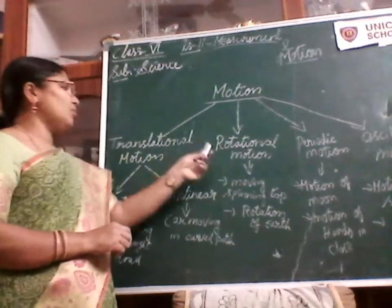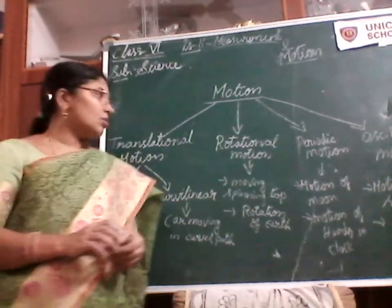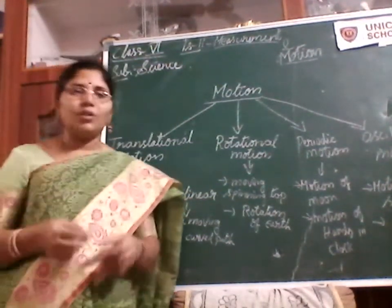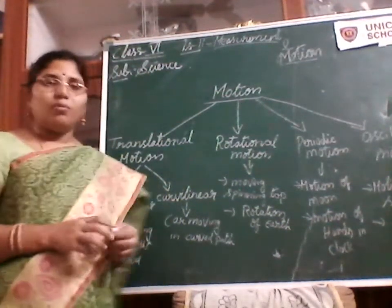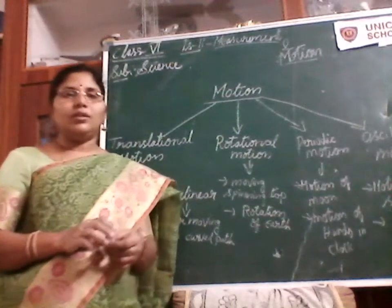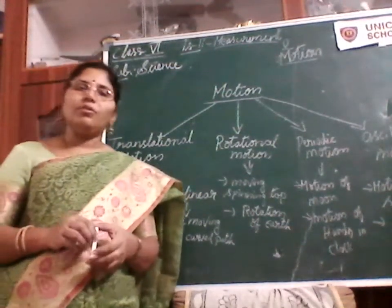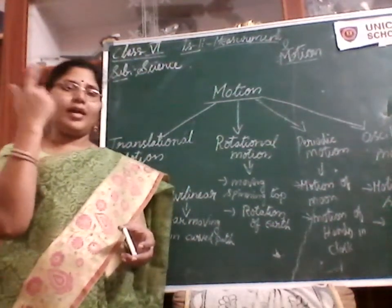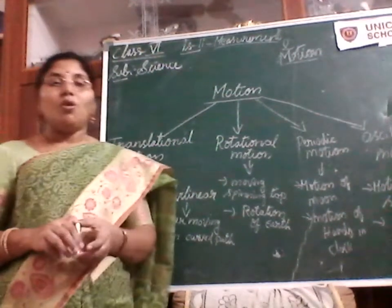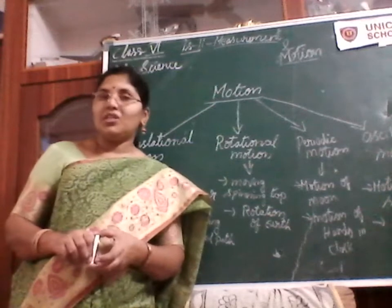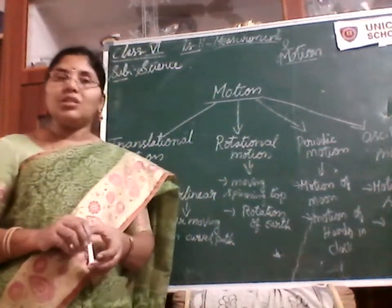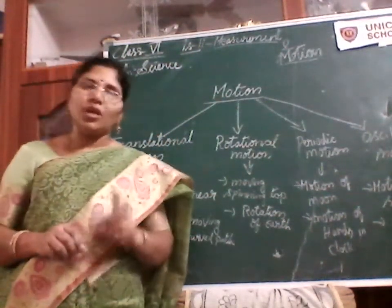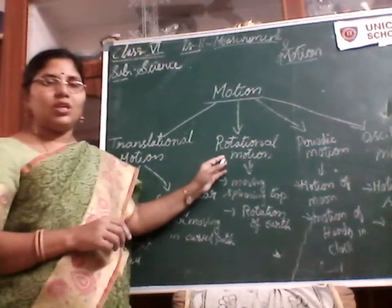The second type of motion is rotational motion. The movement of an object on its own axis, around itself, is called rotational motion. You might have seen how the earth rotates around itself on its own axis — this is rotational motion. Note that revolution does not come under rotational motion, only the rotation of the earth does.